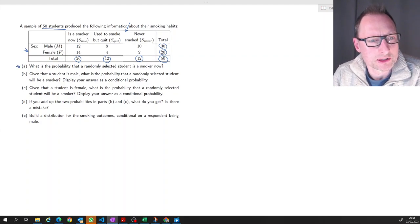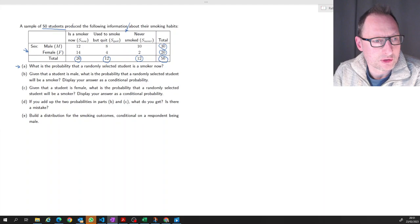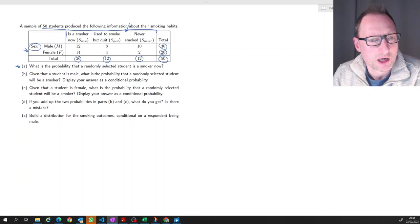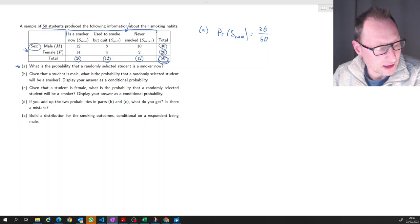So first question here, what's the probability that a randomly selected student is a smoker now? In this question we are only asking about one of the two random variables. We are not interested here in the gender of the respondent, we are only interested in this aspect: are you a smoker now? To answer A, what we are really looking for is, in using notation, the probability of S_now. The probability that someone is a smoker now. Well, that is in this case 26 divided by 50, because 26 out of 50 answered that they were a smoker. That is 0.52, 52 percent.